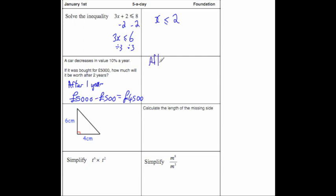Let's then do after 2 years. We've got our £4,500 and we're going to take away 10% of that. Divide this by 10 to get 10%, that's £450. So £4,500 take away £450, that's going to leave you with £4,050. So after 2 years, it'll be worth £4,050.